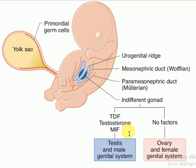There will be structures such as the penis, scrotum, prostate, seminal vesicles, as well as the fallopian tube, the uterus, the cervix, and the vagina.